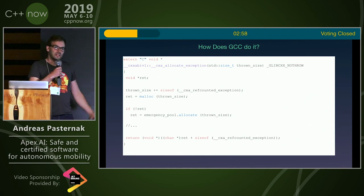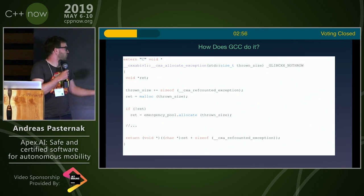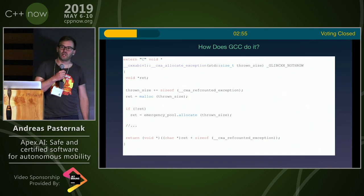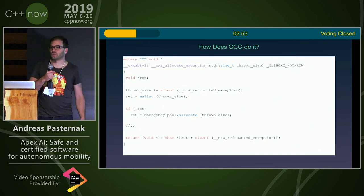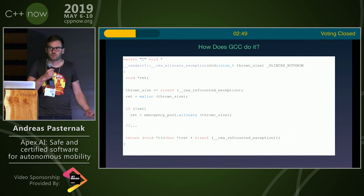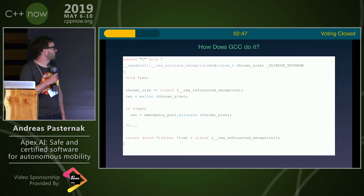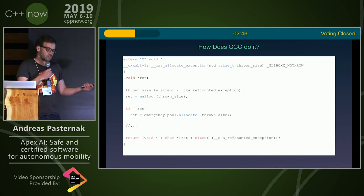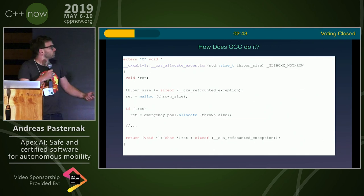Now for safety-critical and real-time systems, you don't want to have memory allocations during runtime. But maybe you still want to use exceptions and still use modern C++ code. So the question is, is there a way to change that behavior?